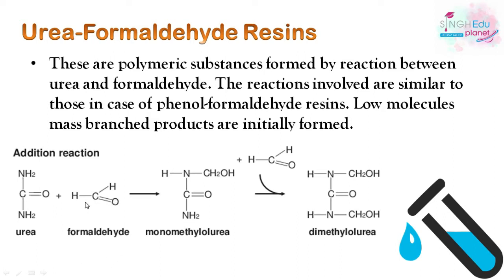In the reaction, the NH2 group of urea reacts with formaldehyde to give CH2OH attached to nitrogen, forming monomethyl urea. Adding another formaldehyde converts it to dimethyl urea, where both NH2 groups are occupied by CH2OH groups.